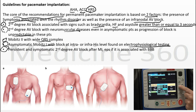As discussed earlier, in MI the second degree or third degree block can be temporary. If the block persists and the patient is symptomatic, then we perform permanent pacemaker implantation, especially in the presence of bundle branch block.